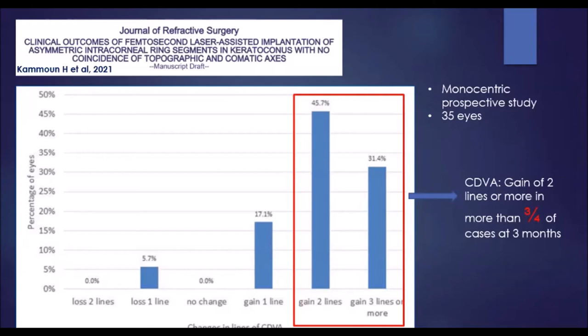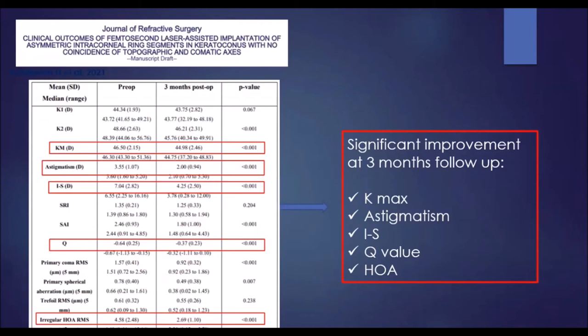Here are our results in a paper recently accepted in the Journal of Refractive Surgery. We used Pro IGL segments in asymmetric keratoconus with no coincidence of topographic and comatic axis. We found more interesting results regarding vision: a gain of two lines or more was recorded in 75 percent of cases. We also found significant improvement of topographic and aberrometric parameters, which are very encouraging results.